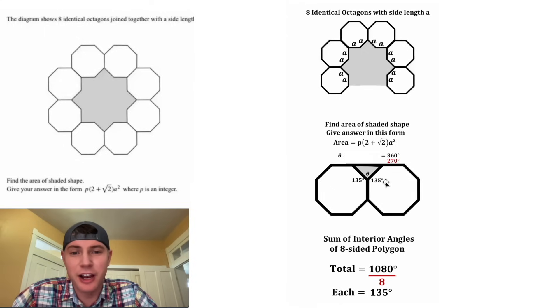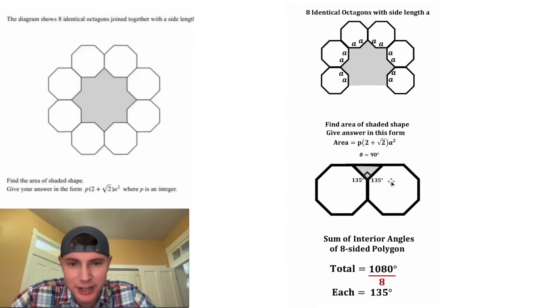On the left side, these cancel each other out. And on the right-hand side, 360 minus 270 is 90. So we know that theta is equal to 90 degrees. That means this here is a right angle, and this is the work to verify that.